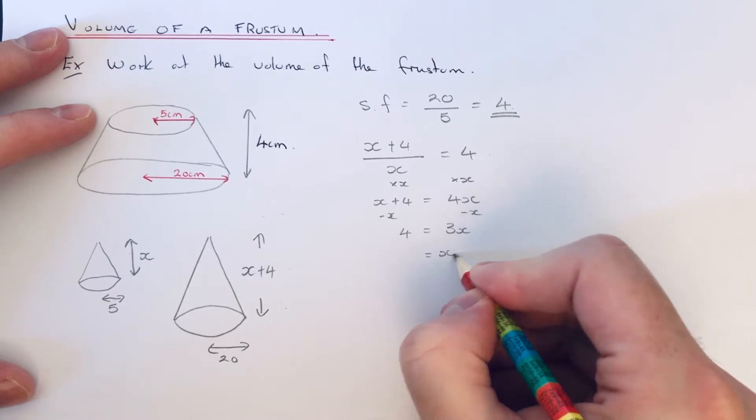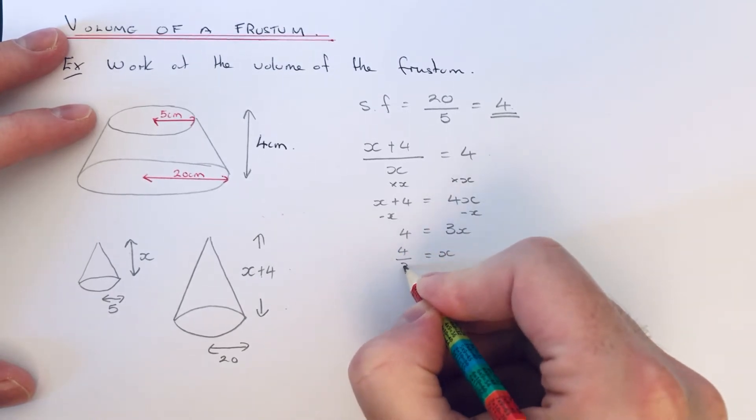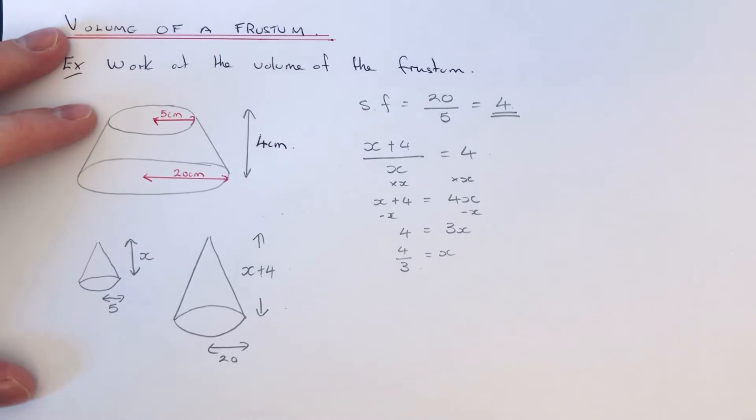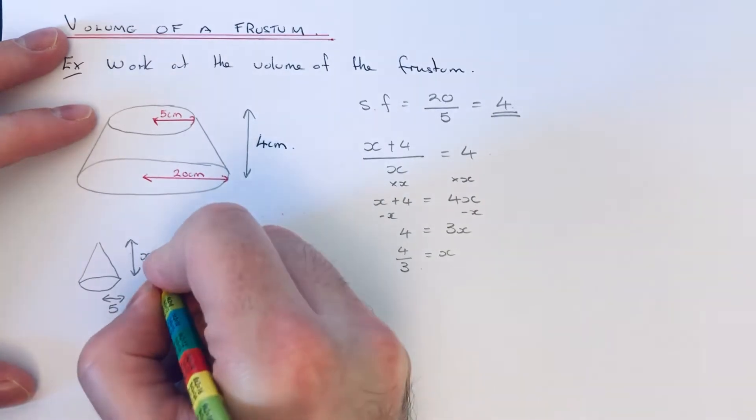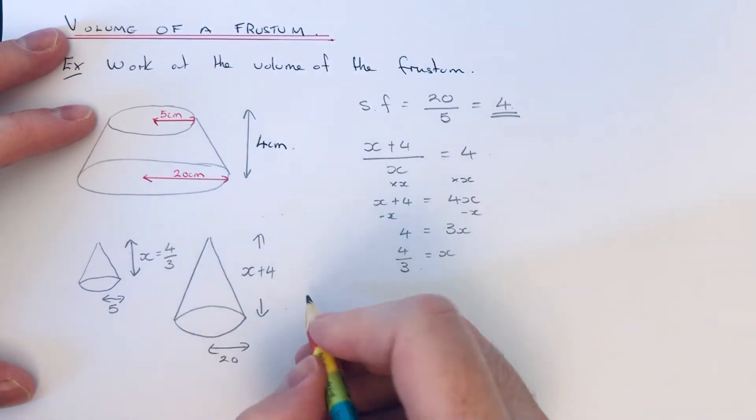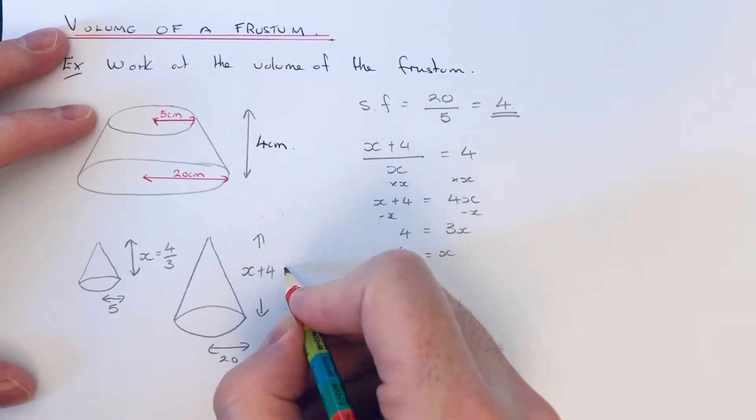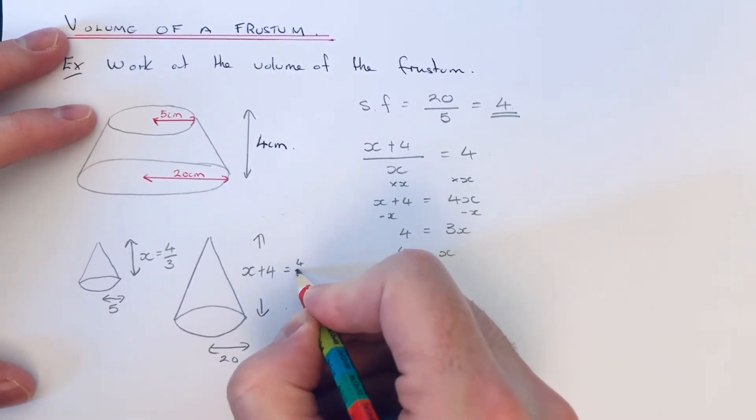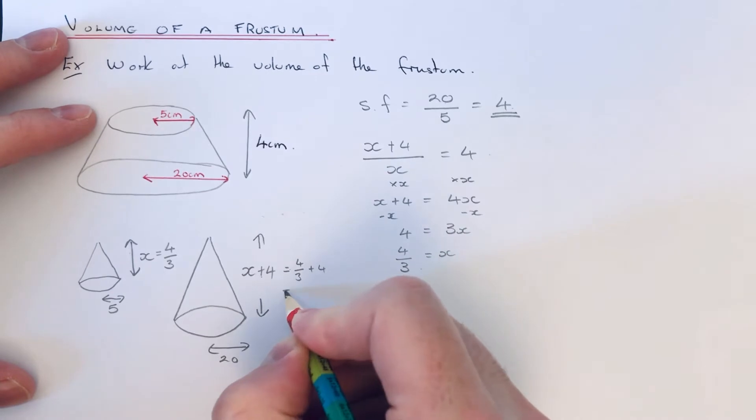So divide by 3 and we get X equals 4 thirds. So this would mean then the height of the small cone would be 4 thirds, and the height of our second cone will be 4 thirds plus 4, which is the same as 5 and a third.